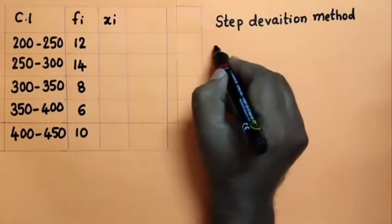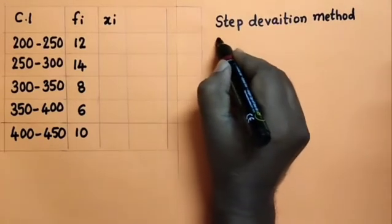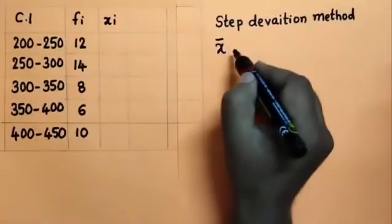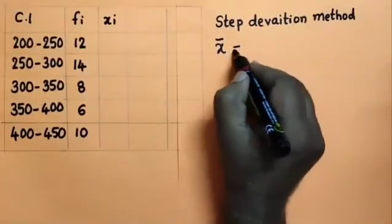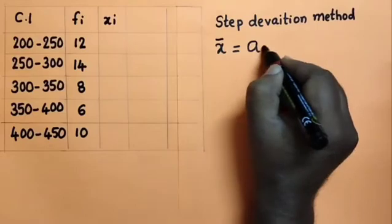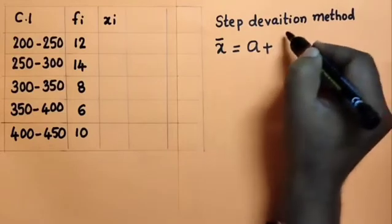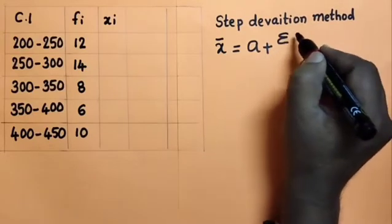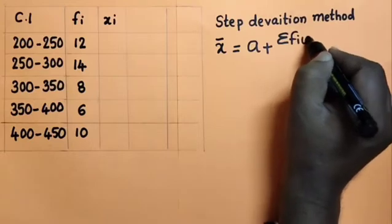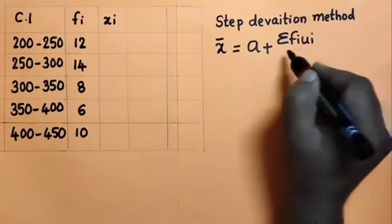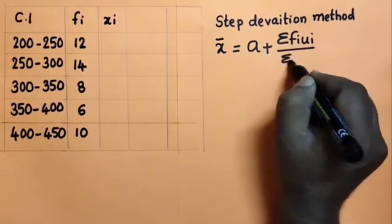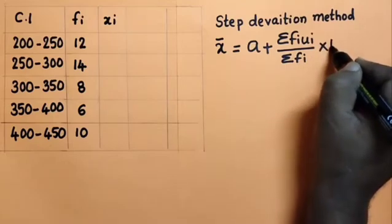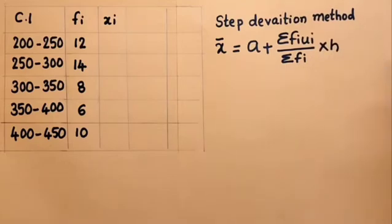The formula for the mean of given observations using step deviation method is: x̄ = a + (Σfiui / Σfi) × h. This is the formula.